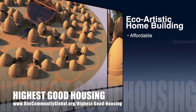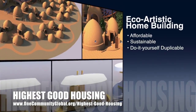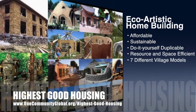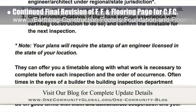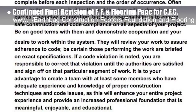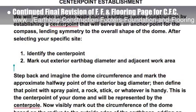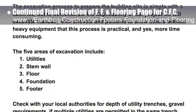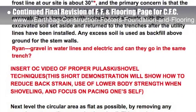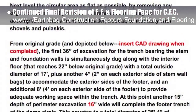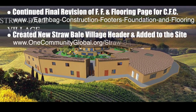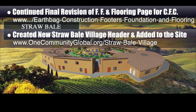The One Community approach to highest good housing is eco-artistic home building that is affordable, sustainable, do-it-yourself, duplicable, resource and space efficient, and consists of seven different sustainably constructed village models. This last week the core team working on highest good housing put another 10 hours into behind-the-scenes revisions for the footers, foundation, and flooring page for the upcoming crowdfunding campaign. This week's focus was footer widths and form specifics, edits of excavation and center point re-establishment, and compass installation details — bringing us to 54% complete with the total rewrite and update. We also created the new straw bale village pod 2 header and updated that page accordingly.